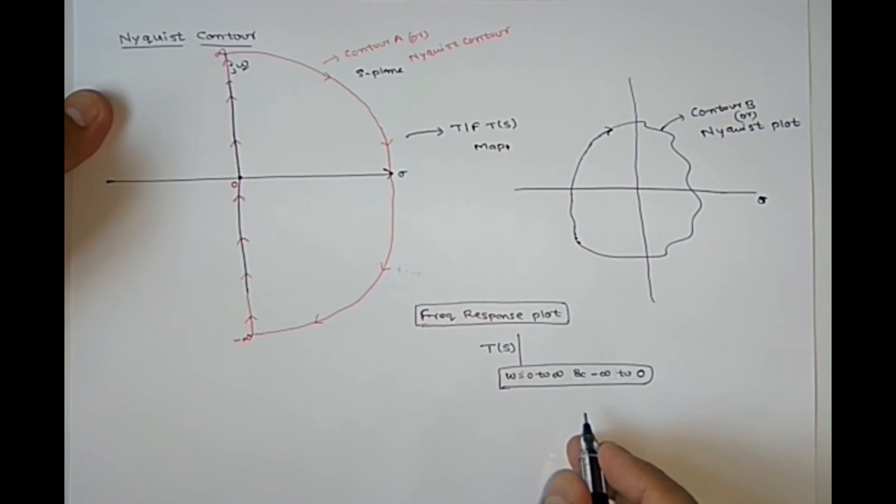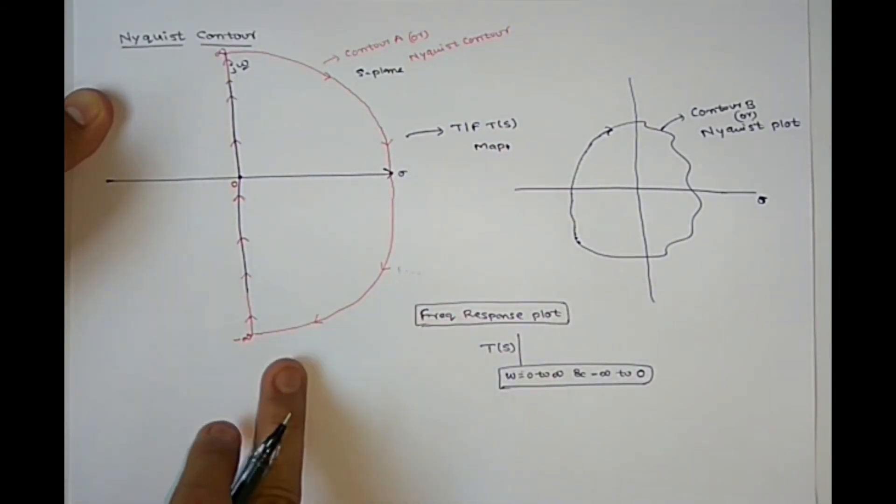So now onwards, you need to conclude that every Nyquist plot will use this contour only.